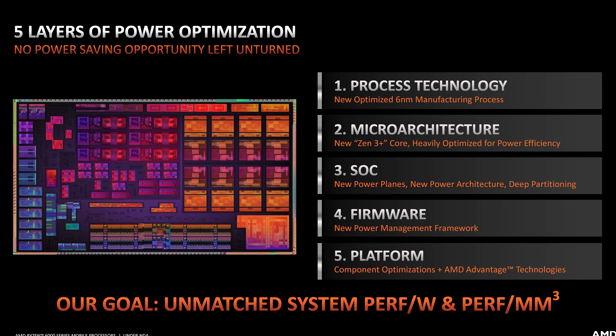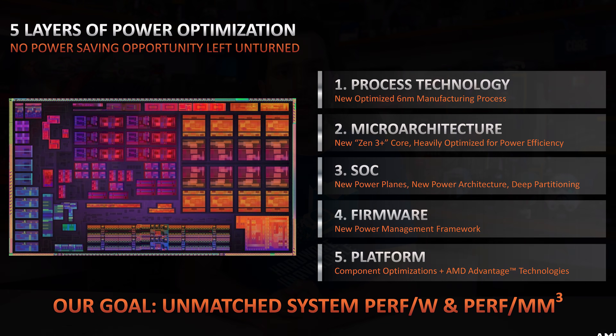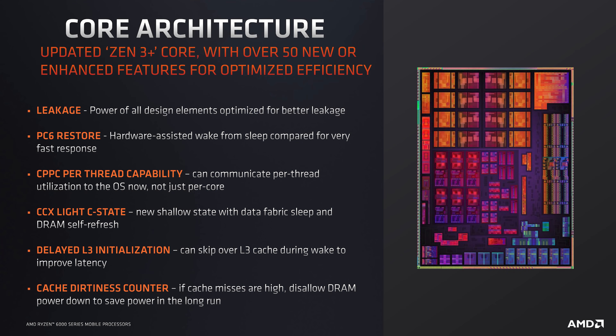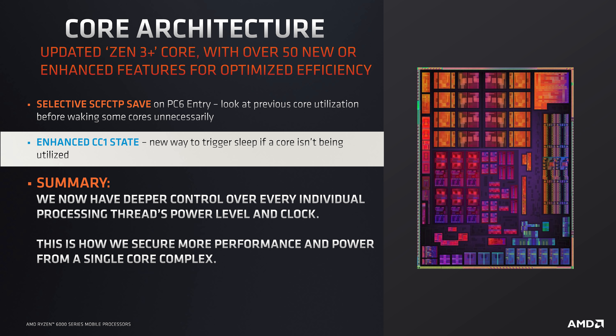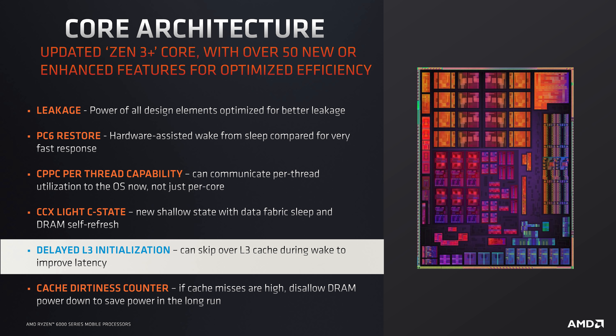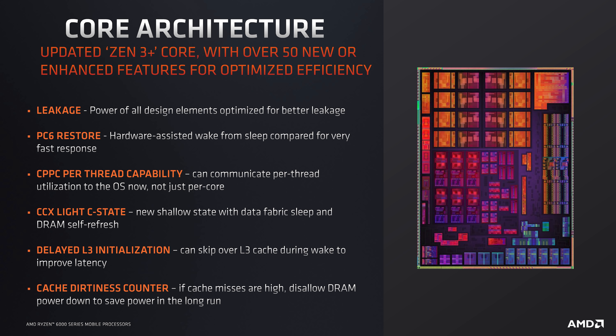We also see the same cache layout with 16MB L3 and 4MB L2. Where the differences lie is in how these CPU elements are managed and how optimized the design is. AMD lists key features of the Zen 3 Plus architecture as design optimizations to reduce leakage, but the majority of changes are to power management — more sleep states with deeper control over individual elements such as the new CPPC per-thread capability, an enhanced CC1 state to sleep cores when not utilized, and the ability to delay L3 initialization, among many other new features.